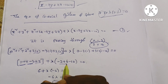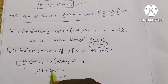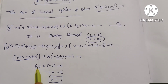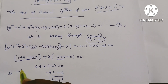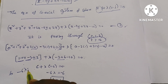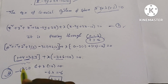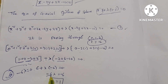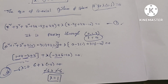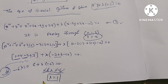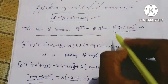Continuing: 4 minus 10 equals minus 6, so 6 plus 6 minus 6 lambda equals 0. Moving terms: minus 6 lambda equals minus 6, so lambda equals 1.